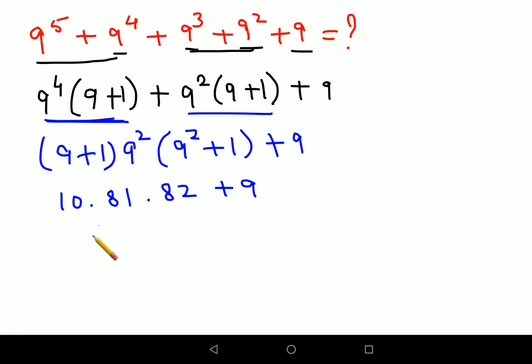So here I can say 10 into 81 into 82 gets you 6642 plus 9. So now 10 into 6642 is getting you 66420 plus 9. So final answer is 66429.